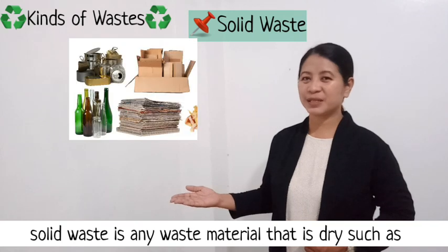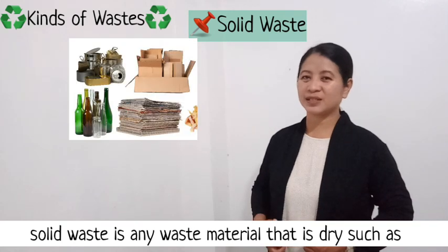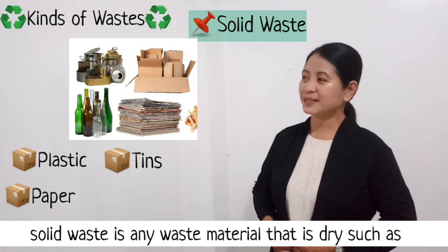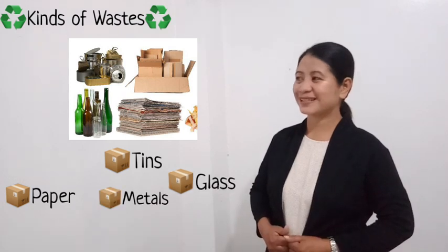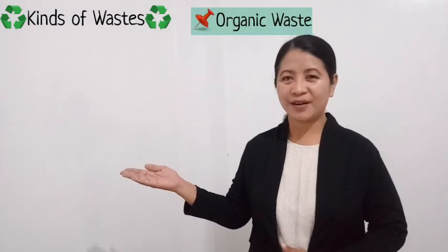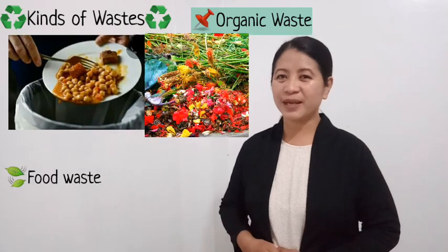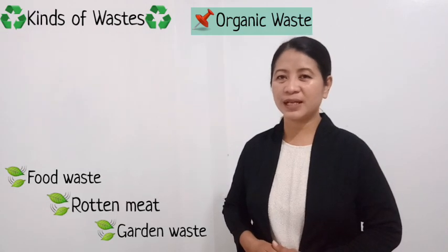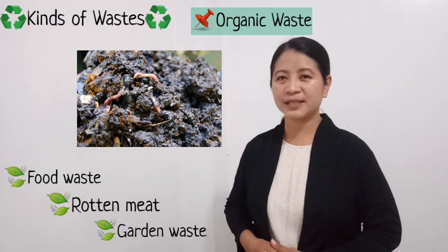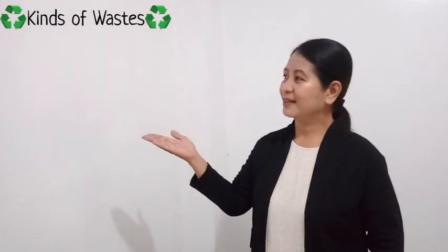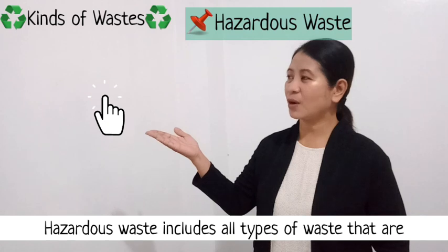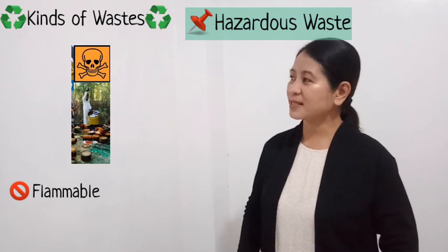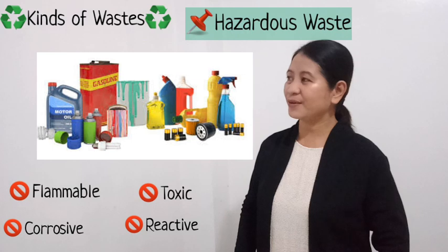Solid waste is any material that is dry, such as plastic, paper, metals, and glass. Organic waste includes food waste, garden waste, and rotten meat, which eventually turn into matter by microorganisms or decomposers. Hazardous waste includes all types of waste that are flammable, toxic, corrosive, and reactive.